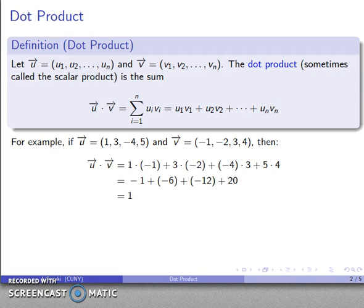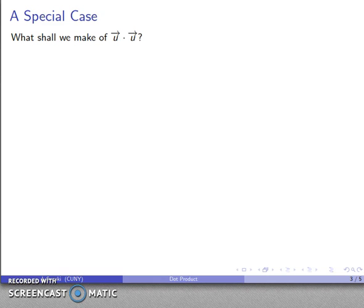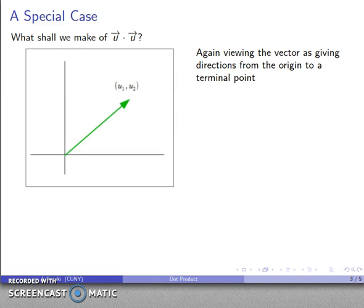Now it would be nice to have some sort of geometric interpretation of what the vector is, so let's think about that. Well, we'll try a special case. Let's start off with u dot u. In other words, a vector dot product with itself. What should we make of this particular dot product? Well, we can view a vector as giving directions from a point to someplace else, and it's easiest to think about this as giving the directions from the origin to a terminal point.